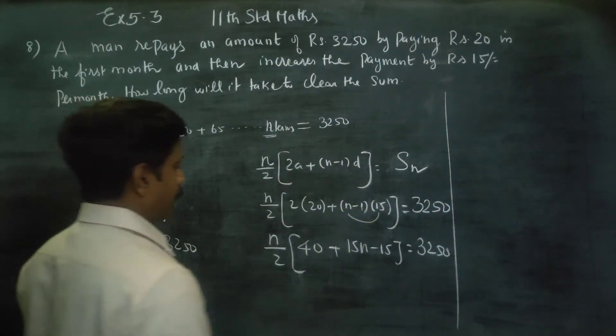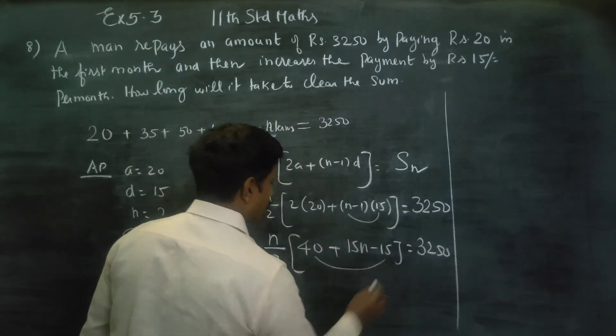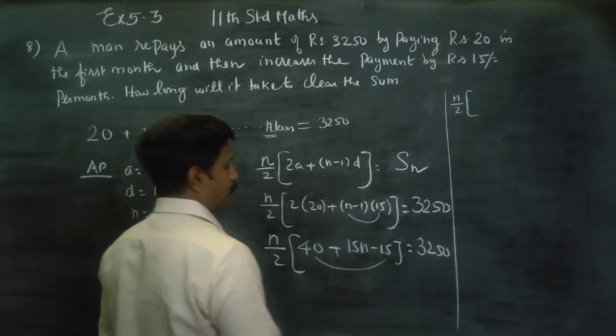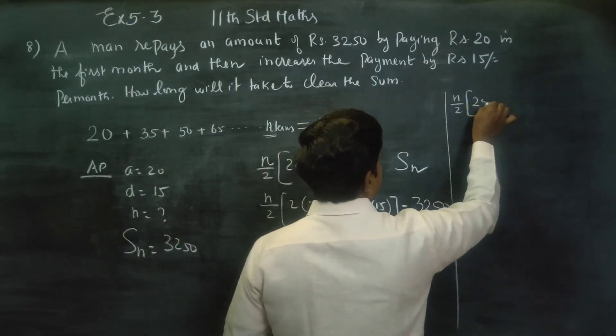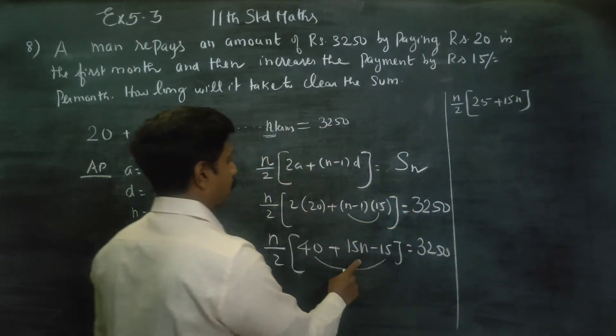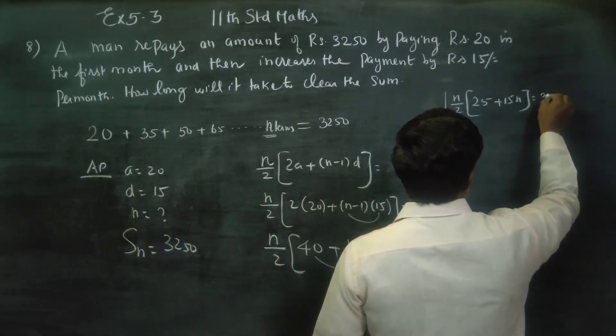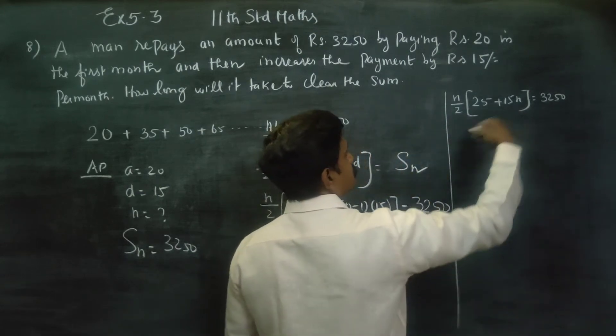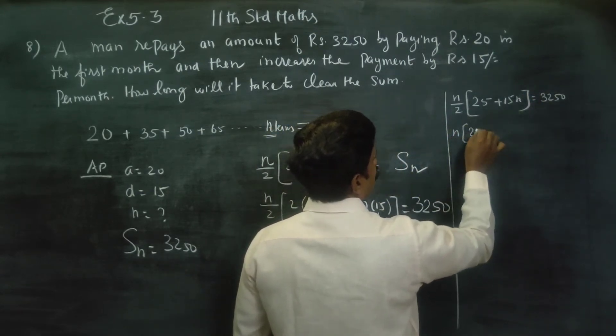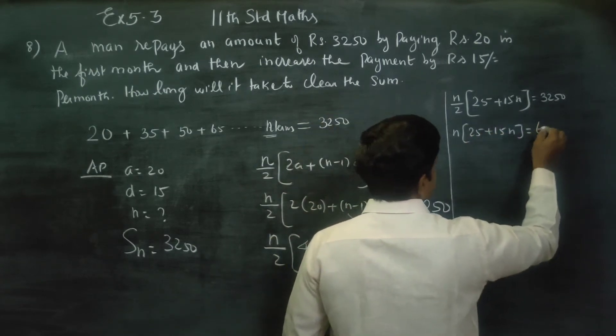Cross multiply by 2. I will be getting 25 plus 15n equals 3250. Just cross multiply by 2, and then n into 25 plus 15n equals 6500.